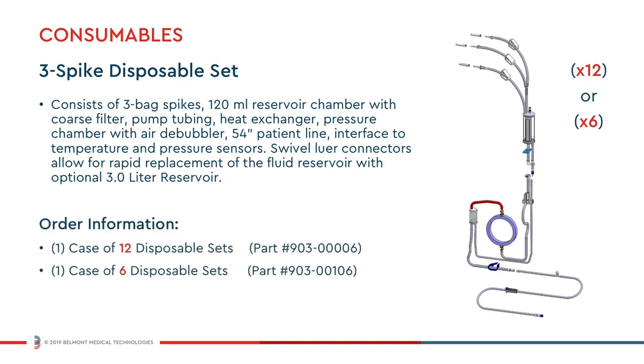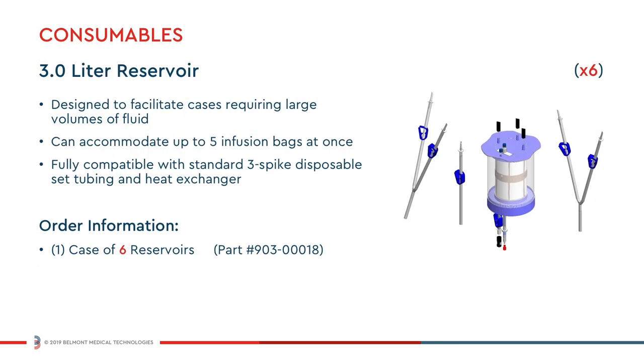The 3-Spike Disposable can now be ordered in two convenient quantities of either 12 or 6 disposables per case. The 3-liter reservoir can accommodate up to five fluid bags at one time and is fully compatible with the standard 3-Spike Disposable Set tubing and heat exchanger. The reservoir can be easily installed before or during a procedure in replacement of the standard 120-milliliter reservoir.